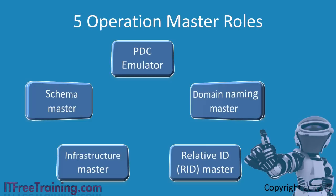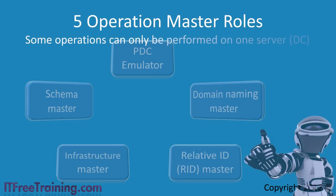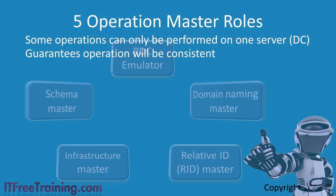Active Directory is a multi-master replication system, but some operations are best performed on one server at a time. By having these operations performed in one place, this allows one server to be responsible for these changes. Having the operation only on one server ensures that when an operation is performed, the result is consistent across all the Active Directory databases and also eliminates the possibility of replication conflicts.